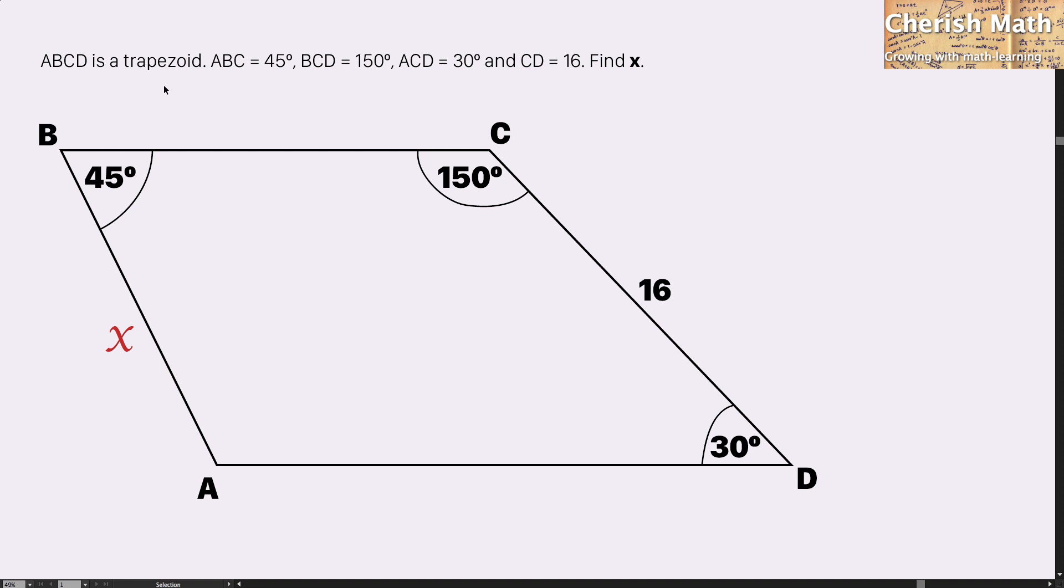ABCD is a trapezoid. Angle ABC equals 45 degrees, angle BCD equals 150 degrees, angle ACD equals 30 degrees, and the length of CD equals 16. Find X.